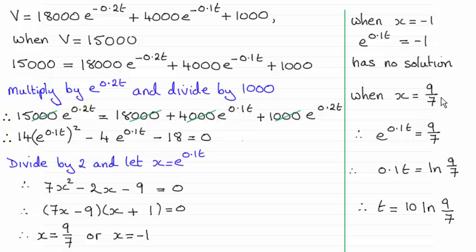So when x equals 9/7, we've got e^(0.1t) then for x equals 9/7. And then I've just taken natural logs to both sides. That leaves me with 0.1t equals the natural log of 9/7.